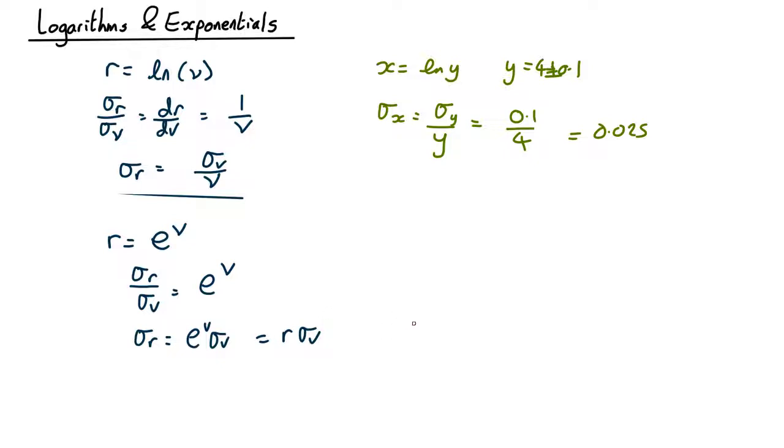I'll put it another way. Sigma r over r equals sigma v.